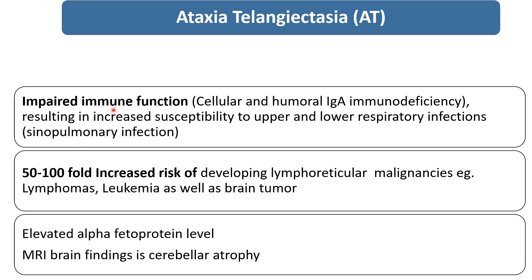These patients also have impaired immune function — both cellular and humoral IgA immunodeficiency — which is why they have increased susceptibility to respiratory infections, both upper and lower. Sinopulmonary infections are common. They also have a risk of developing lymphoreticular malignancy, with an almost hundredfold increased risk. Lymphoma, leukemia, and brain tumors can develop later.